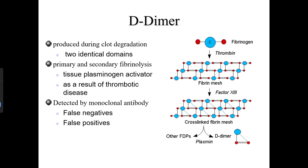D-dimer is produced during clot degradation and has two identical domains — primary and secondary. Fibrinolysis involves tissue plasminogen activator as a result of thrombotic disease, detected by monoclonal antibody. False negatives and false positives are possible.